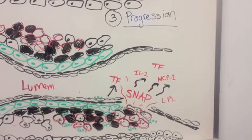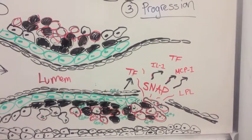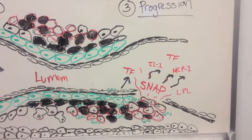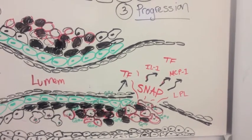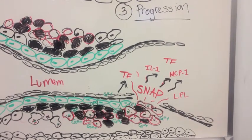Eventually, the plaque becomes unstable because the smooth muscle cells and macrophages cannot compensate fast enough and the fibrous cap becomes thin.